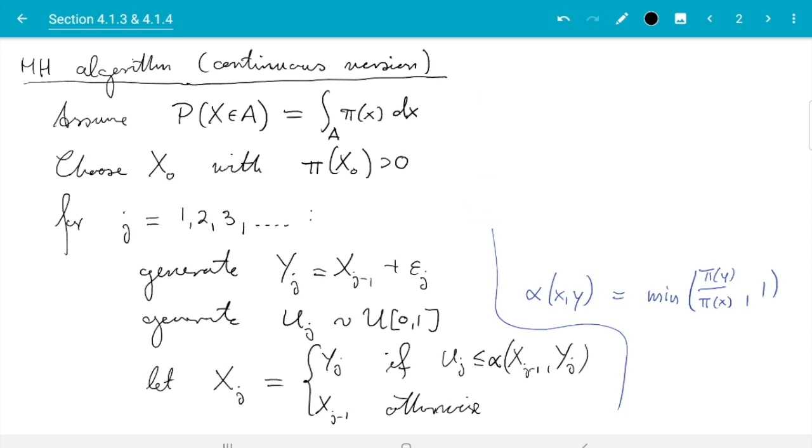And for what I call the most common case we would choose epsilon j normal distributed with mean zero and some variance sigma squared. So that slightly simplifies the algorithm because again alpha is simpler. And here we know how to generate these samples.